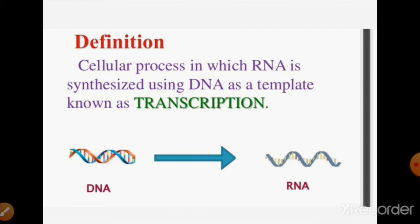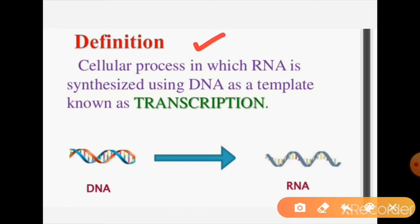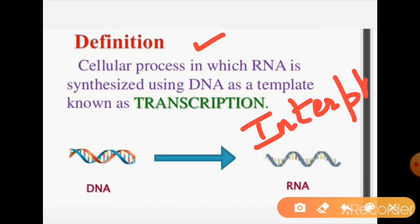So what is transcription? Transcription is a cellular process in which RNA is synthesized using DNA as a template. DNA de ek strand jo template pol de haan, us upar RNA synthesize hunda hai. Is process noo aasi bolde haan transcription. Transcription is the formation of RNA from the DNA template, and it takes place during the interphase - the resting phase, but metabolically very active phase of cell cycle.